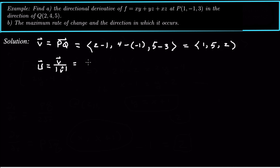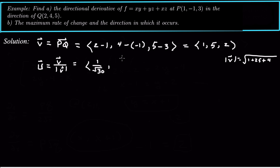The magnitude of v equals the square root of 1 plus 25 plus 4, which is the square root of 30. So each element is divided by the square root of 30, giving us the unit vector u = (1/√30, 5/√30, 2/√30).